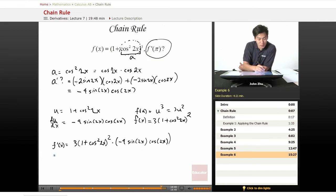f prime of pi. So we'll just go ahead and plug in pi, and we'll get 3 times 1 plus, well, cosine of pi is 1, squared is 1, times negative 4.